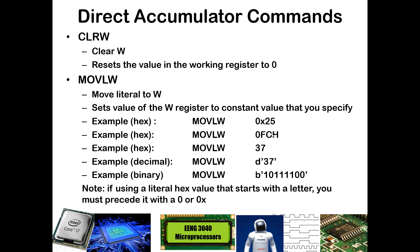To use hexadecimal, you can end it with an H. But it's important to note that if the value in hexadecimal starts with a letter, such as FC, you need to add the leading 0. Also, if you just put a constant like 37, it is interpreted as hexadecimal 37.